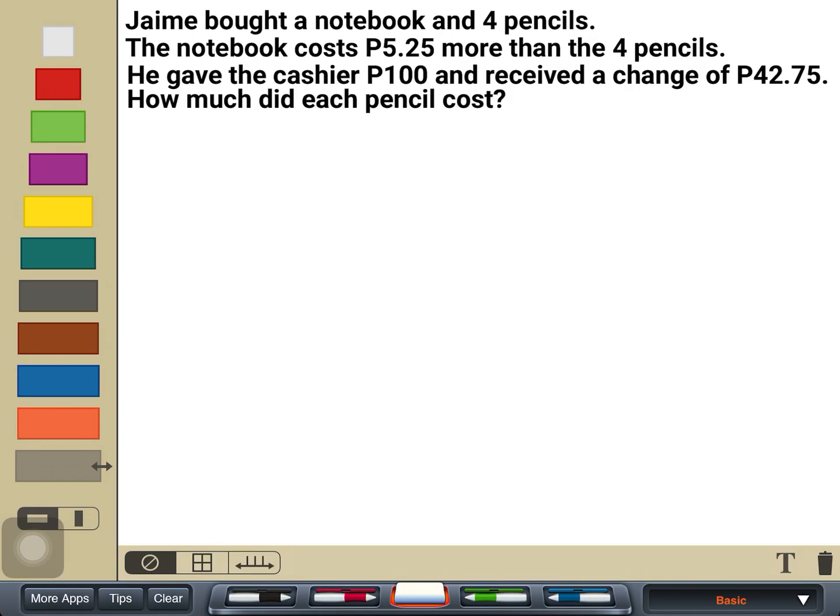Jamie bought a notebook and four pencils. The notebook costs 5 pesos and 25 centavos more than the four pencils. He gave the cashier 100 pesos and received a change of 42 pesos and 75 centavos. How much did each pencil cost?